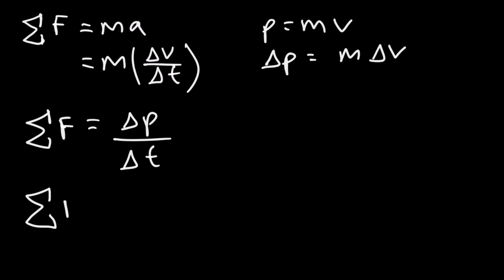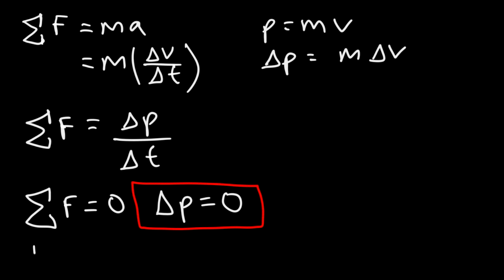If the net force acting on a system is zero, then the change in momentum has to be zero, which means momentum is conserved. So if the initial momentum of the system is 100, the final momentum has to remain 100 — it can't change. Whatever it was before, it has to remain the same after.